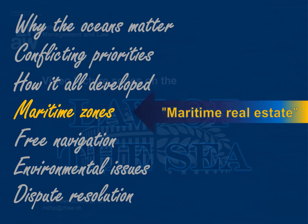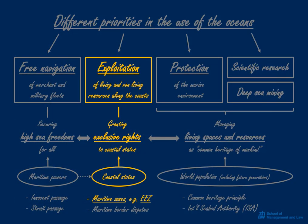Such claims result in what we can call maritime real estate. It's all about coastal states' exclusive rights to the exploitation of resources in the sea areas near their coasts. Such exclusive rights can clash with other priorities in the use of the oceans, namely with free navigation and with the protection of the marine environment. In addition, coastal states' claims to offshore zones can give rise to maritime border disputes with neighboring states.